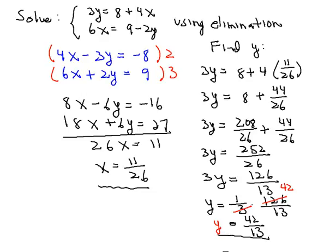So we can then say that the solution as an ordered pair to this system is the ordered pair 11 all over 26 comma 42 all over 13. Certainly not very nice numbers are they?